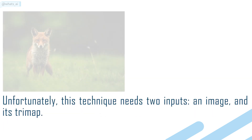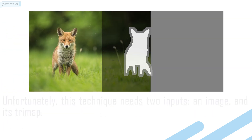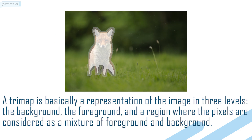Unfortunately, this technique needs two inputs: an image and its trimap. A trimap is basically a representation of the image in three levels — the background, the foreground, and a region where the pixels are considered as a mixture of foreground and background, looking like this.